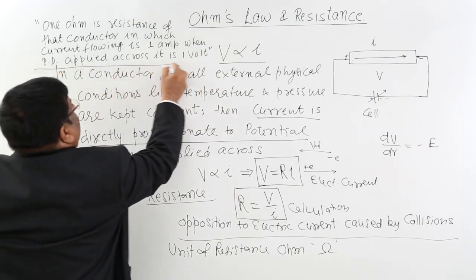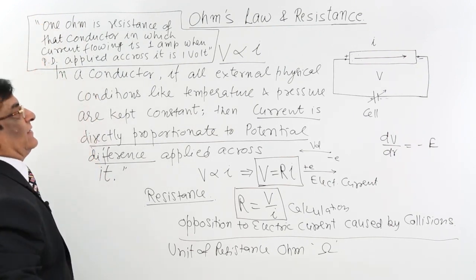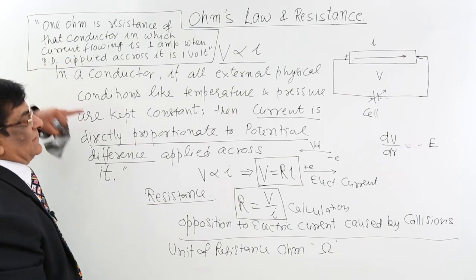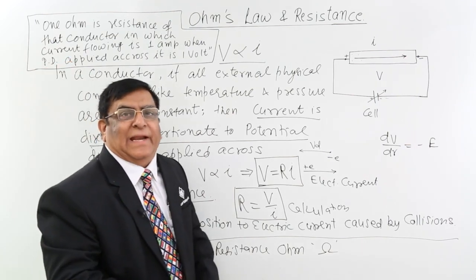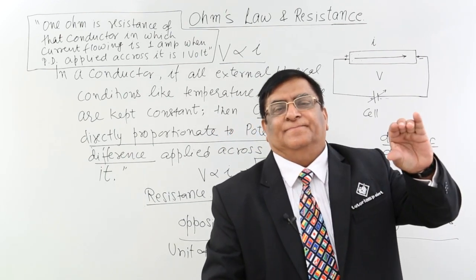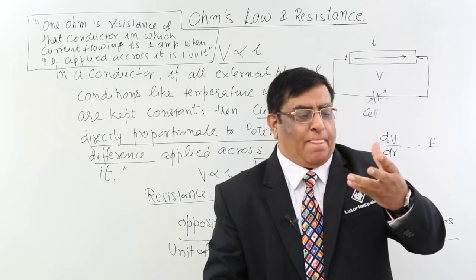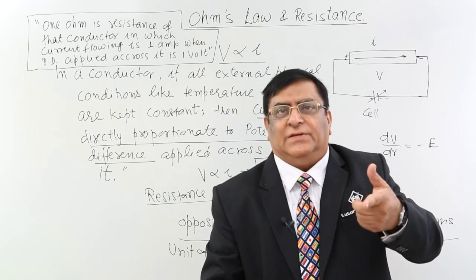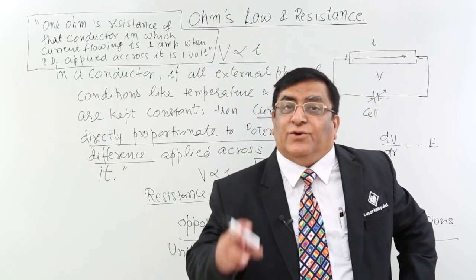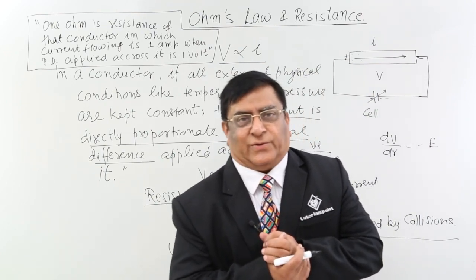So this is our definition of 1 ohm resistance. This is Ohm's law and this is 1 ohm resistance. In the next lecture we will see what forms the resistance inside, how we can connect it with electric charge, drift velocity and other quantities, and a new term — resistivity — that we will learn in the next lecture. Thank you.